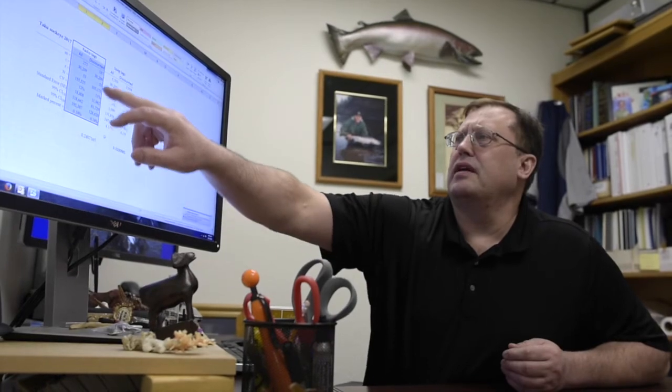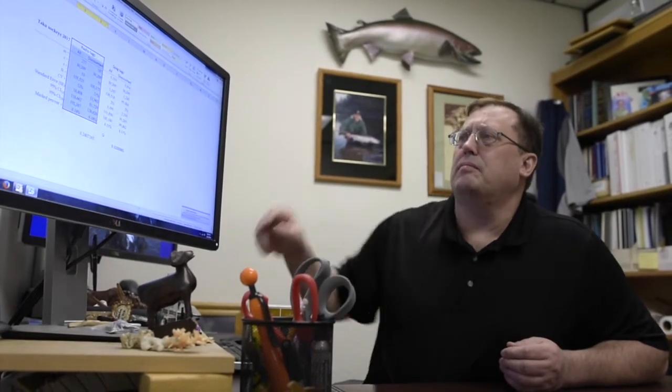So we put the radio tags on to look at this aspect. We put 277 radio tags on last year, and of those, 187 of them actually went above the border and entered the population. So roughly 32% of them did not make it into the population.